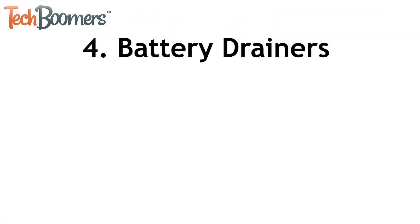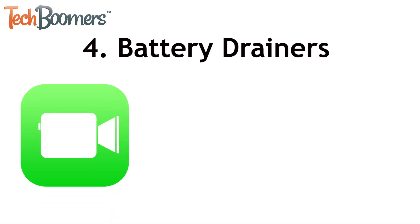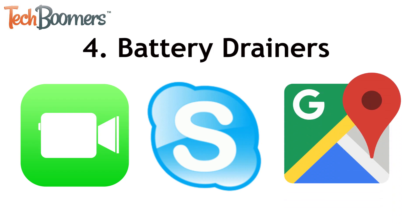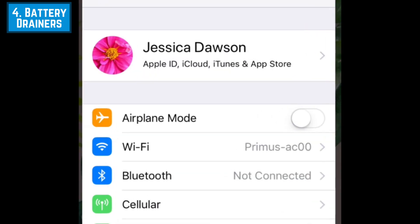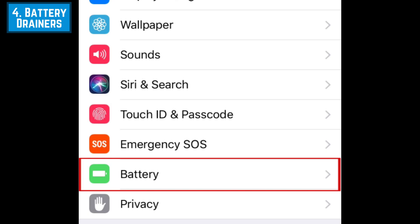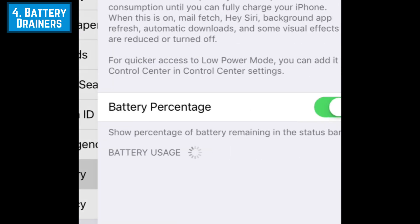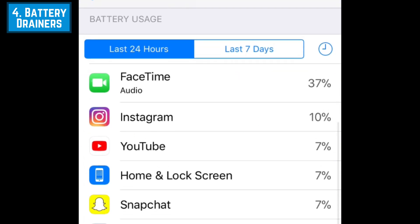The fourth kind of app you should uninstall are apps that drain your device's battery the fastest. Communication apps like FaceTime and Skype, as well as navigation apps like Google Maps, can use up lots of battery power. You can see what percentage of your battery was used by an app since it was last charged in your settings. Open Settings, then scroll down and tap Battery. Under the Battery Usage heading, you'll see a list of the apps and features that use your battery the most, listed in order of percentage of battery used.